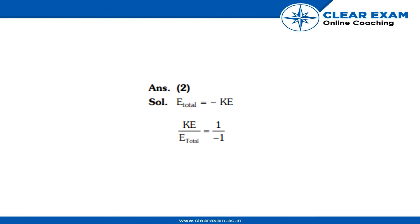The answer is 1:-1. The total energy (U_total) is equal to minus the kinetic energy, so KE divided by total energy equals 1 upon -1.